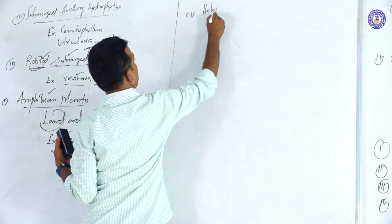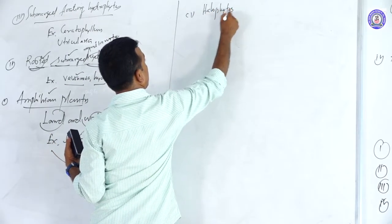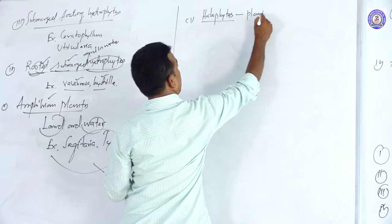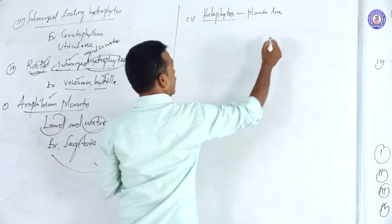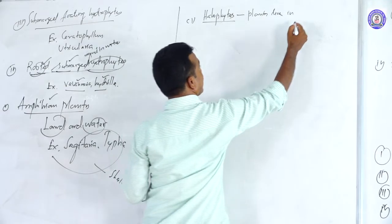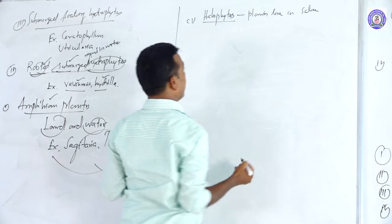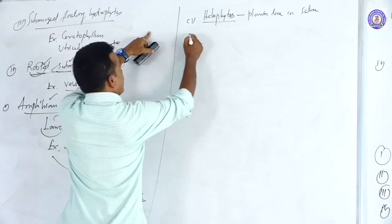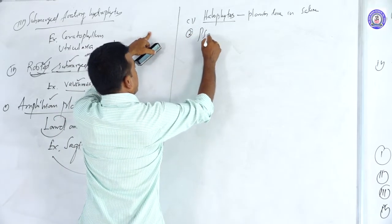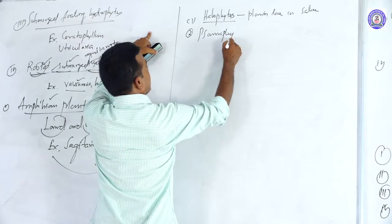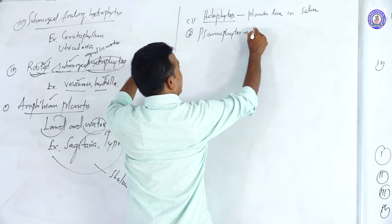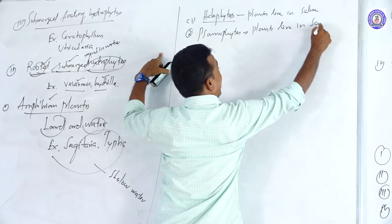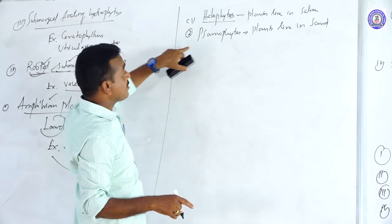First: halophytes — plants that live in saline conditions or in sand. Sand-living plants are commonly called halophytes. Second type: psammophytes — plants that live in sand.